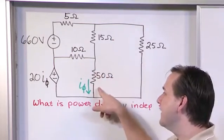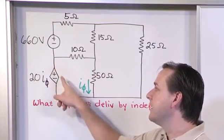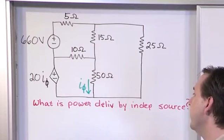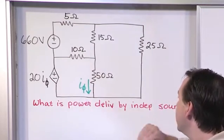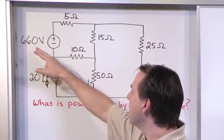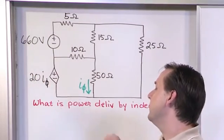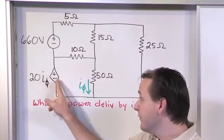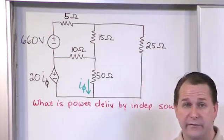Whatever the current flowing through here is, if we multiply it by 20, that's the voltage appearing across those terminals. We've got a nice circuit with another independent source up here, a resistor network, and the dependent voltage source down below.